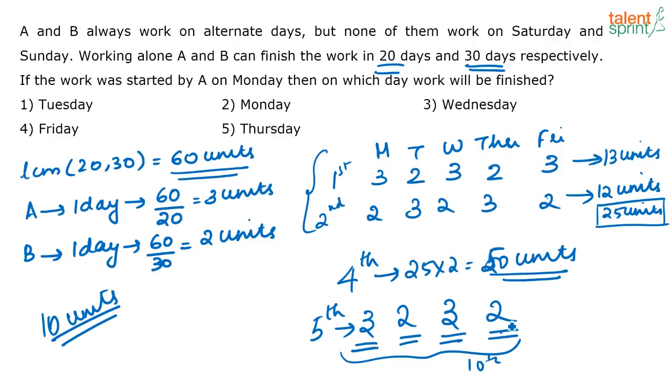So the work will be completed on which day? On a Thursday. And who will complete it? It will be completed by B. Last day, the person who is working will be B, because B will be the one doing 2 units. So do it using this way. It is far more easier with the calculations.